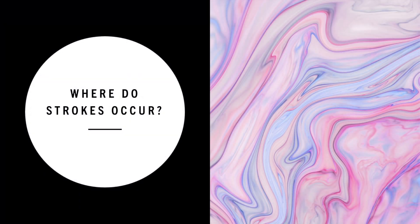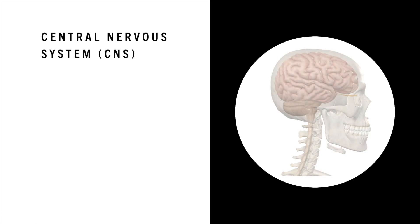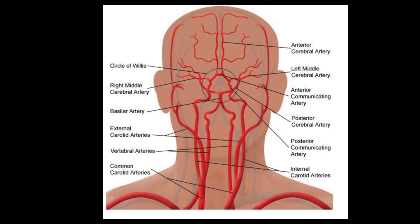Where do strokes occur? Strokes occur in the central nervous system, also known as the CNS. The CNS consists of the brain, brainstem, and spinal cord. A stroke occurs when arteries that supply oxygen and other nutrients to different areas in the brain and spinal cord are blocked or burst.